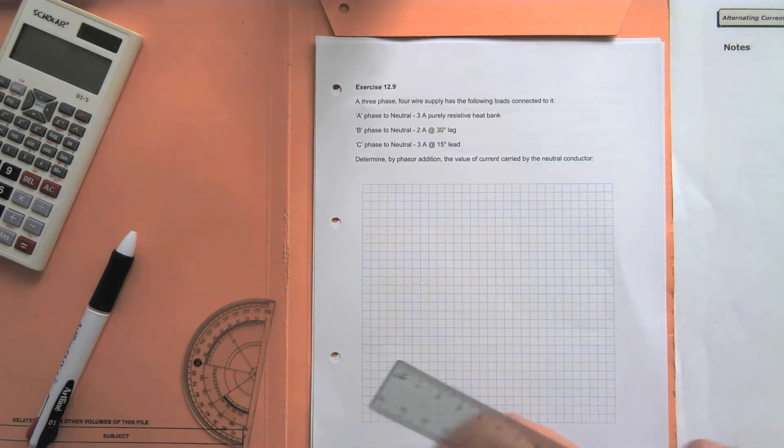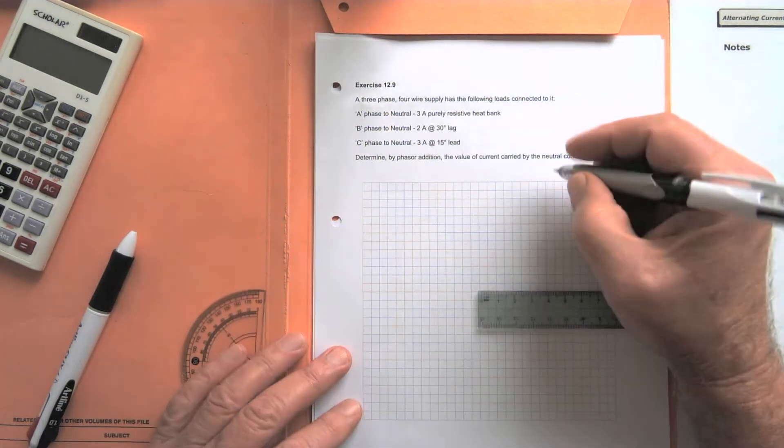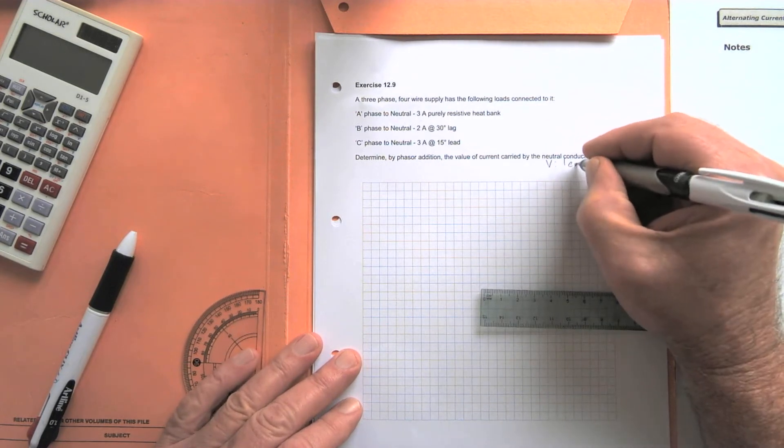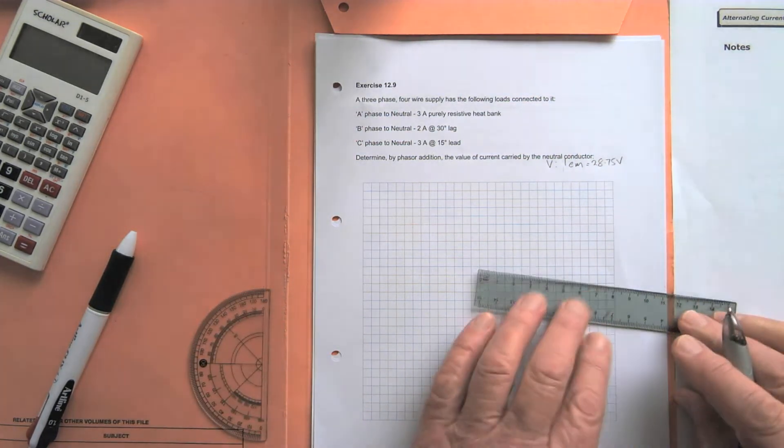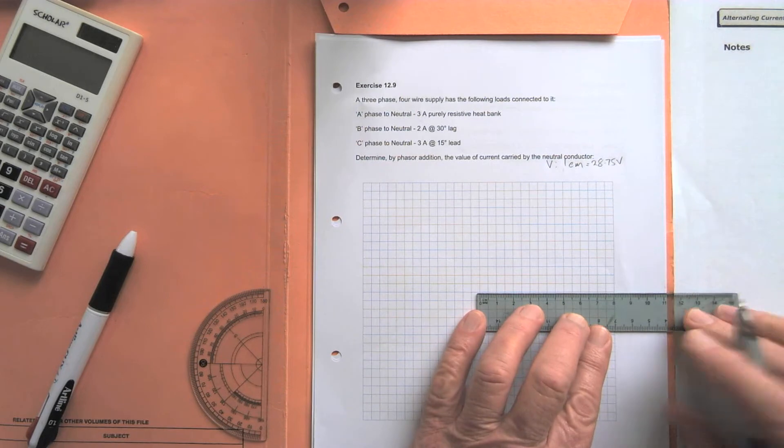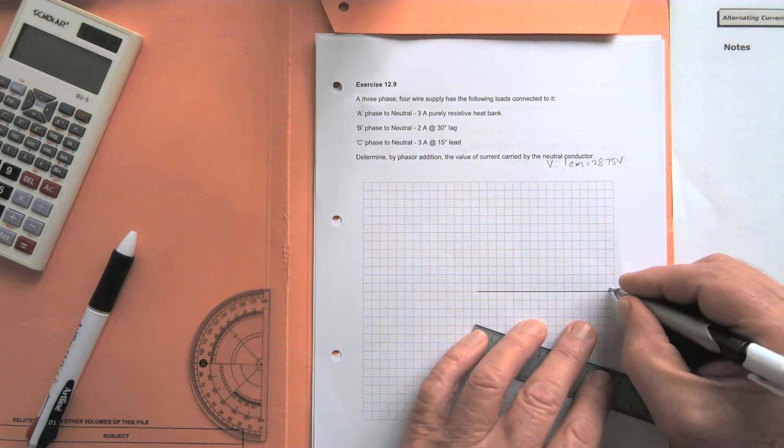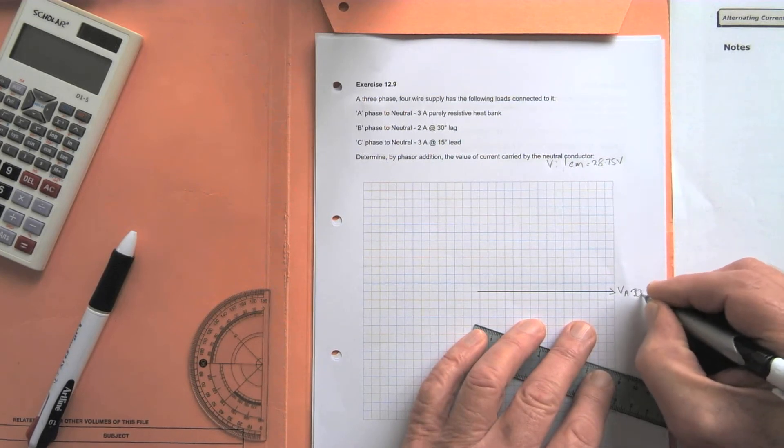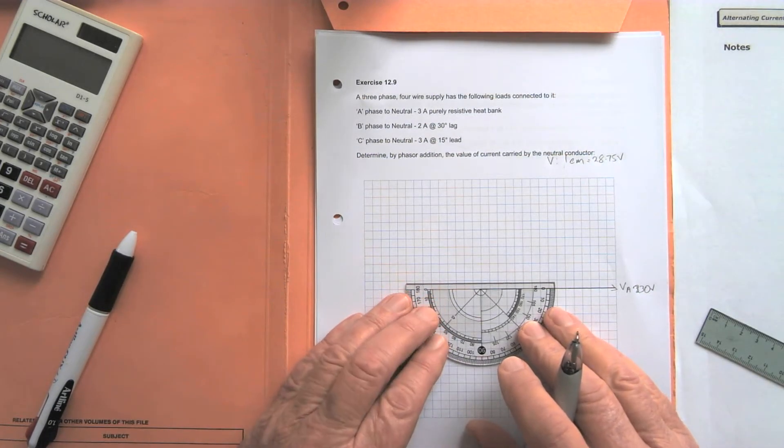We'll set up our three-phase phasor first. A suitable scale typically for this size page would be for the voltage, we'll do one centimeter equals 28.75 volts. So that gives me the A phase voltage coming across here at eight divisions. So VA at 230 volts, of course, out of phase with that.